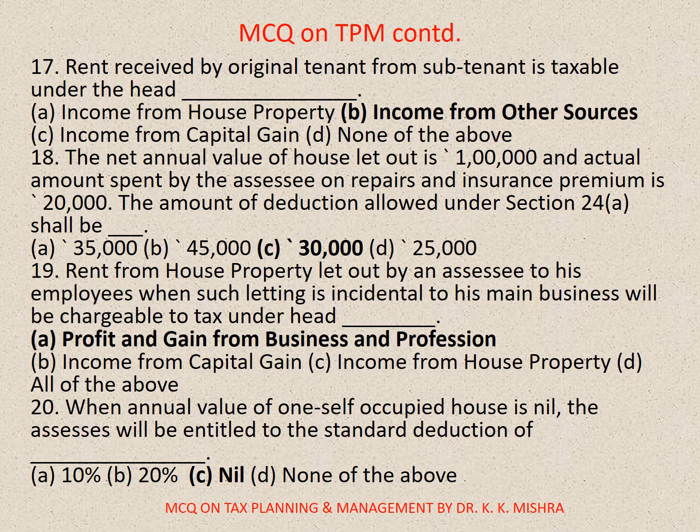Question number 19: Rent from house property let out by an assessee to his employees, when such letting is incidental to his main business, will be chargeable to tax under the head — correct option is A: Profit and gains from business and profession.